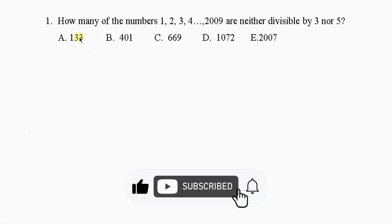We're going to be solving this question which says how many of the numbers 1, 2, 3, 4 to 2009 are neither divisible by 3 nor 5.